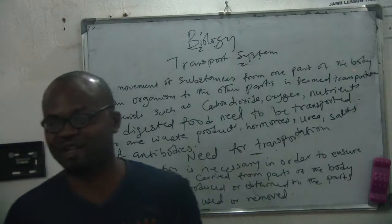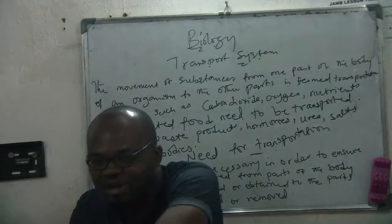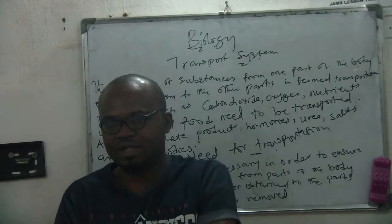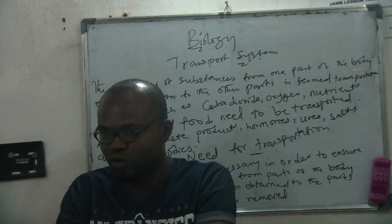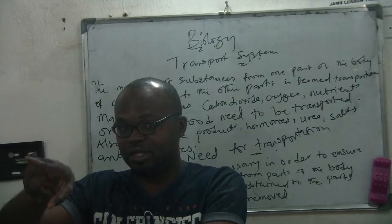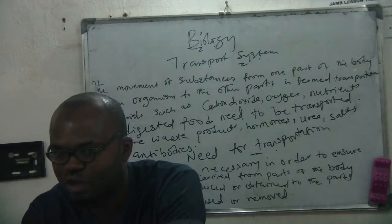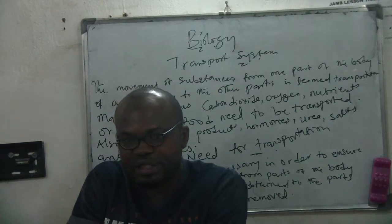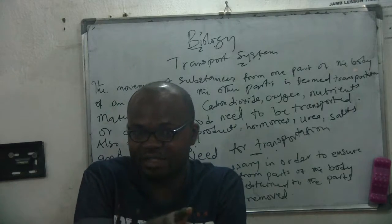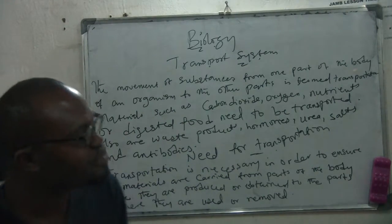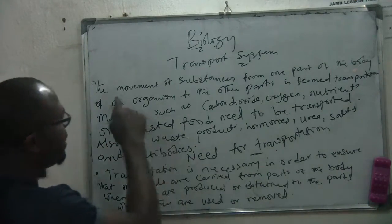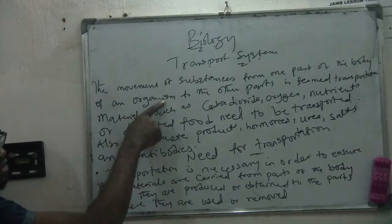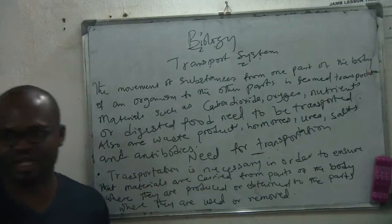The transport system is not like the transport where you drive from one place to another. It is inside the body - how blood is flowing. Blood was flowing inside something and when you cut it, it starts coming out. The blood is transporting, carrying oxygen or food from one part of the body to the part that needs it. The movement of substances from one part of the body of an organism to another part is transportation.